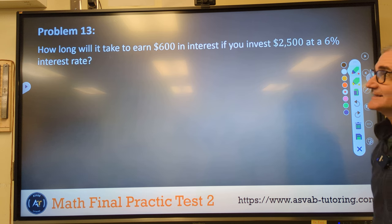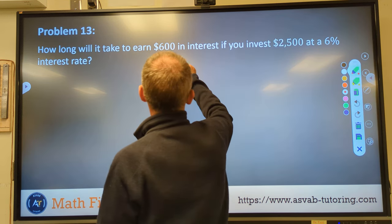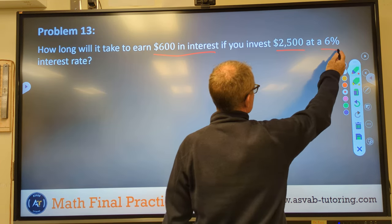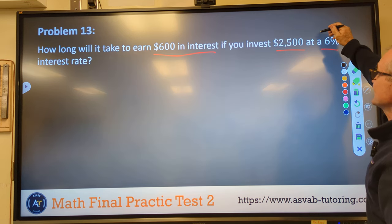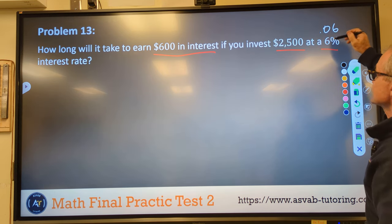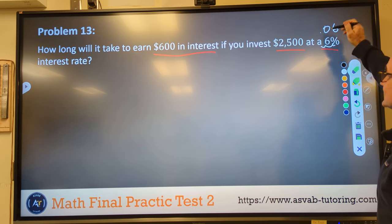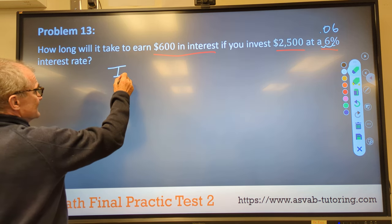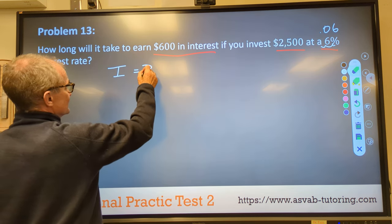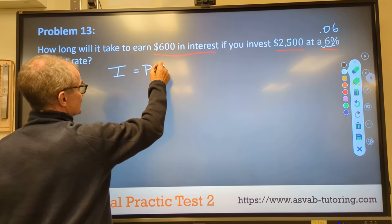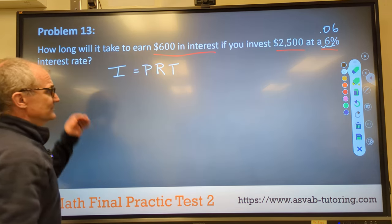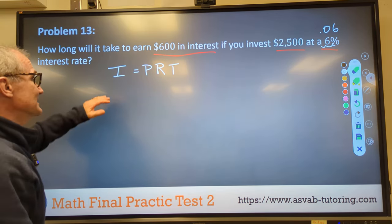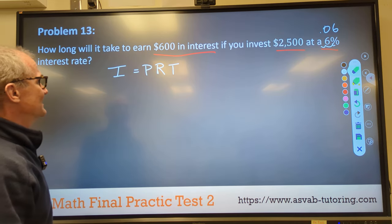Problem number 13, how long will it take to earn $600 in interest if you invest $2,500 at 6%? Well, let's change this right off the bat from 6% to 0.06. Think of this thing as an arrow, shooting it over 1, 2 places, 0.06. We need to know this equation. Interest is equal to principal times rate times time. I think of it as PERT, but for a test, you need to know that, but this is actually one of the most important equations for financial well-being as well, so it's a good thing to know.